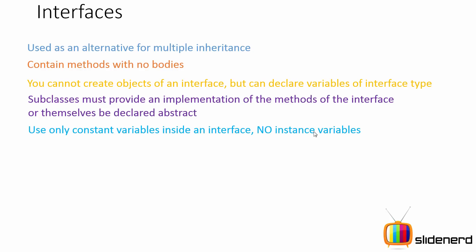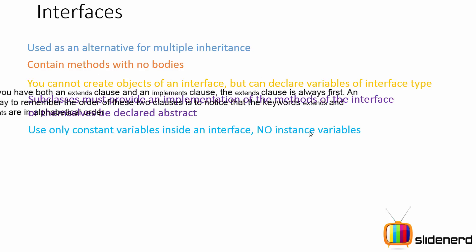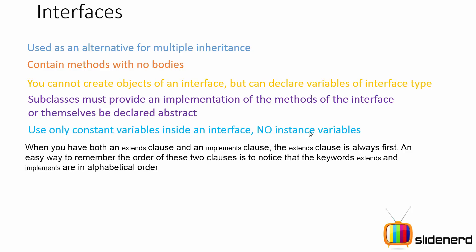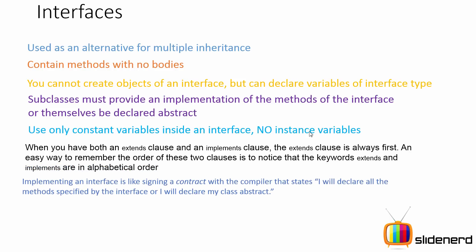Use only constant variables inside an interface — there cannot be any instance variables, because an interface may look like a class but it is not a class. When your class is both extending something and implementing an interface, the extends must come before the implements. This way you can have multiple interfaces implemented in your class.